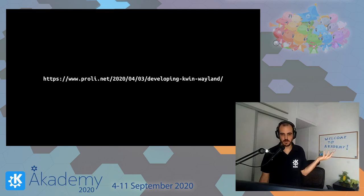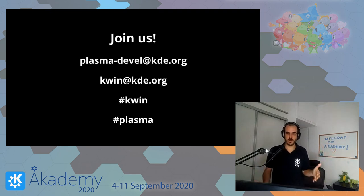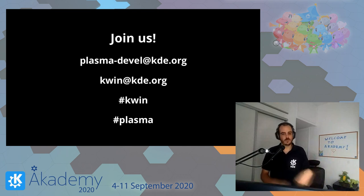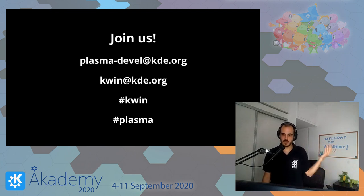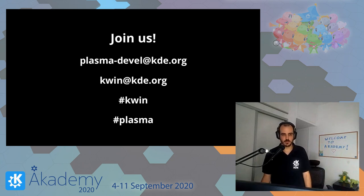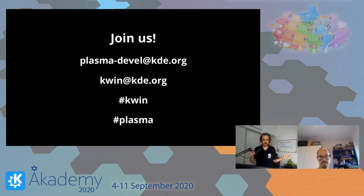If you have questions about something you'd like to implement, you can send an email to the plasma-devel mailing list for broader topics, or the KWin mailing list for KWin-specific things — it's fine if you send to either and we'll help you. There are also Matrix and IRC channels: #kwin and #plasma, where you'll find developers from both projects. That's what I wanted to cover — thank you.